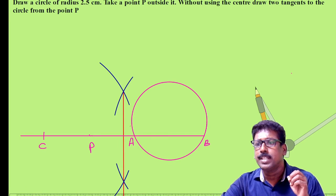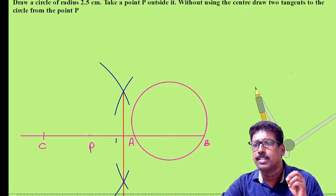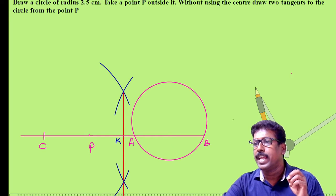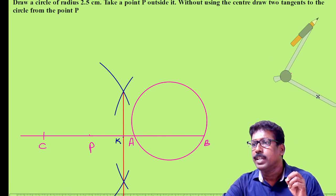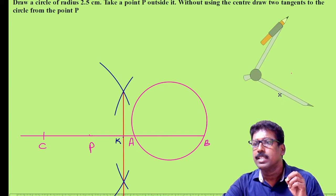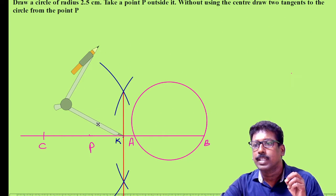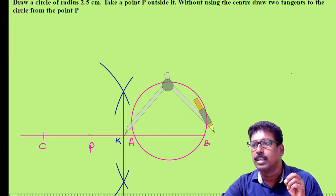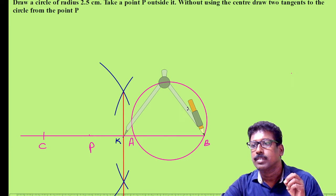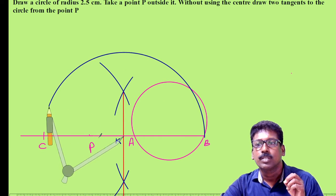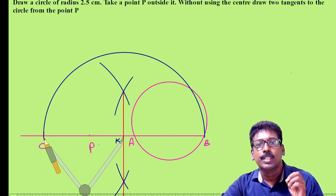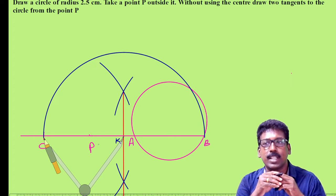Let the perpendicular bisector meet BC at K. Now with K as center and radius KB, draw a semicircle. Here is your semicircle.